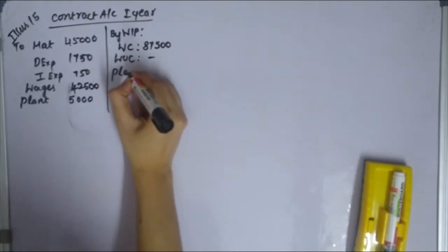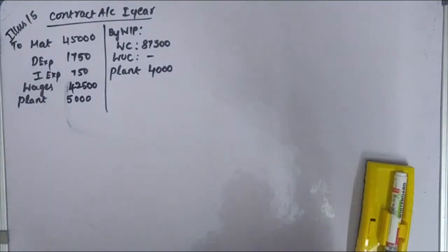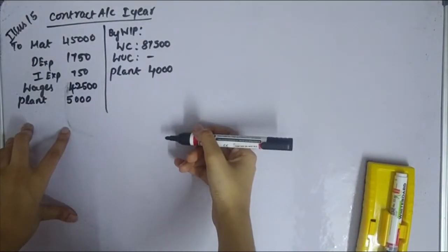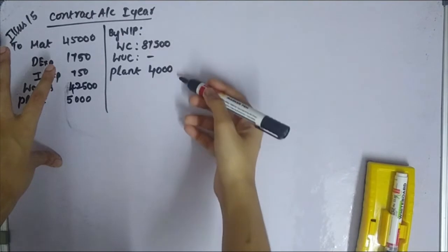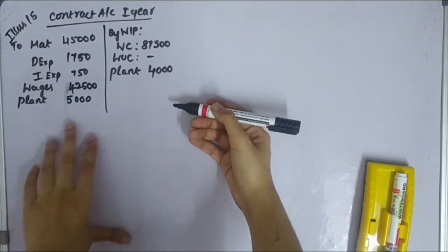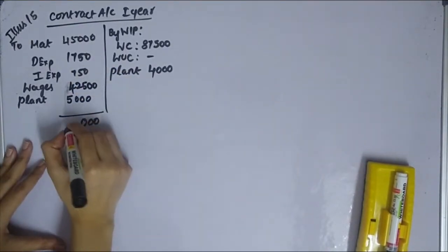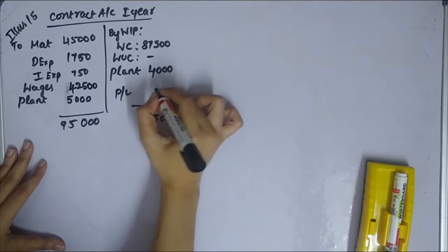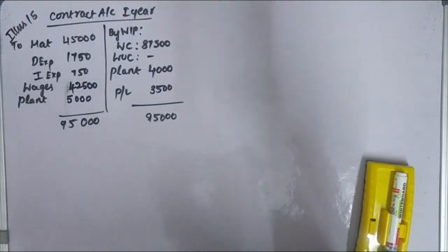The plant value of Rs. 4,000 goes to the credit side at year end, and the year-end plant goes to the debit side. When we total the figures, we get Rs. 95,000, and the resulting loss is transferred to the Profit and Loss account.